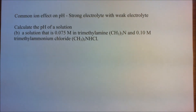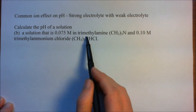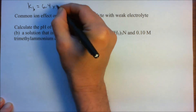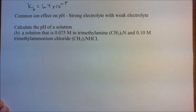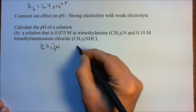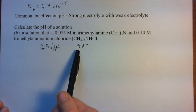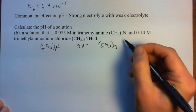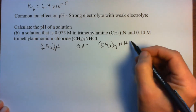Next, we have a problem very similar to the last one, except this time we have a base — triethylamine — and its conjugate acid, which is a strong electrolyte. Triethylamine is a weak base, and it has a Kb. We'll use the ICE method again. This time it's the OH⁻ concentration we're looking for, and the common ion is the triethylammonium ion from the strong electrolyte.